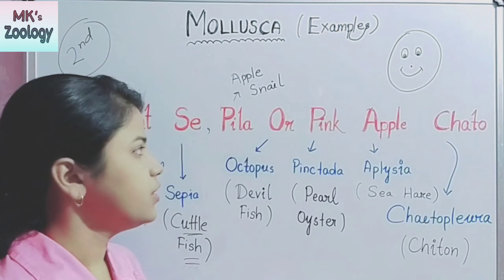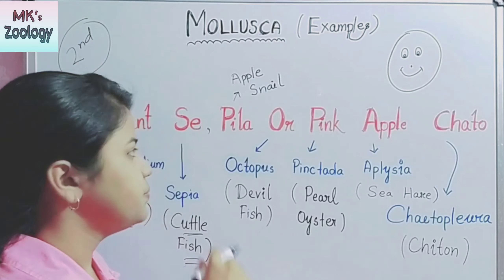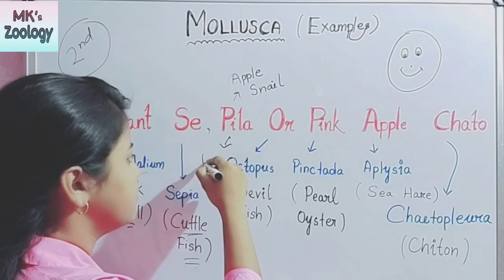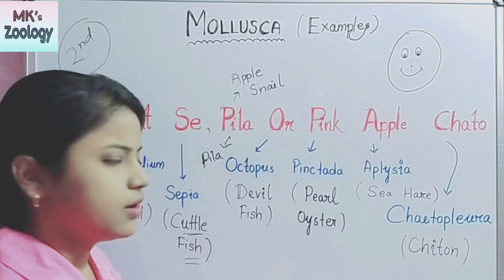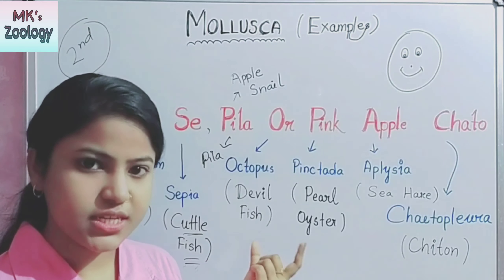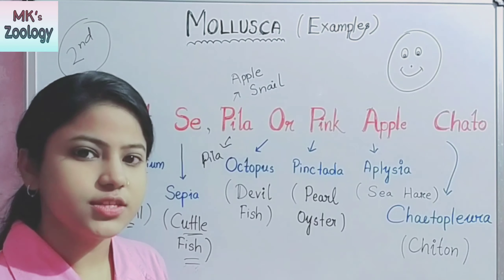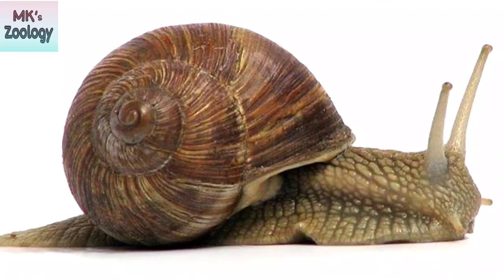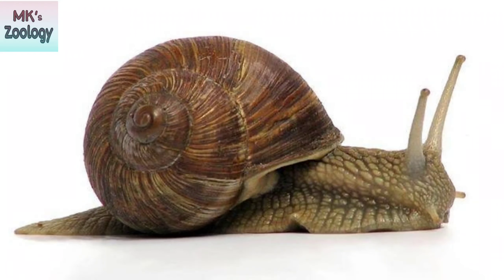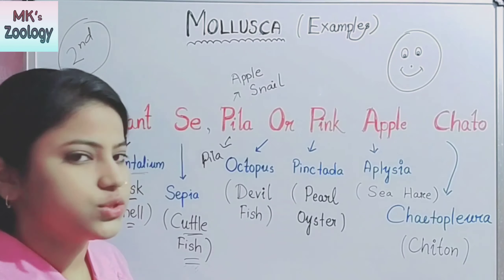The next one is "Pila". Pila is a species of phylum Mollusca, also known as apple snail. The diagram of Pila is shown on screen.